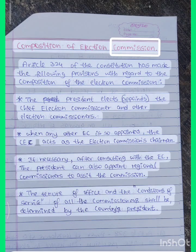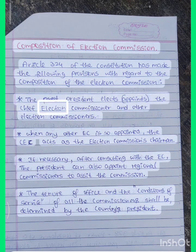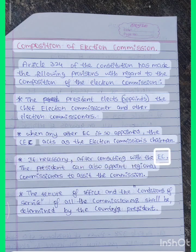Composition of Election Commission: Article 324 of the Constitution has made the following provisions with regard to the composition of the Election Commission. The President appoints the Chief Election Commissioner and other Election Commissioners. When any other Election Commissioner is appointed, the CEC acts as the Election Commission's Chairman. If necessary, after consulting with the Election Commission, the President can also appoint regional commissioners to assist the Commission.